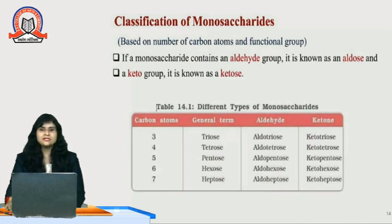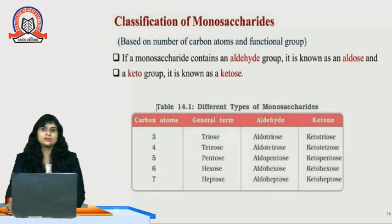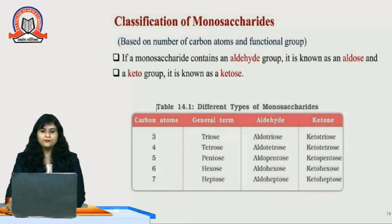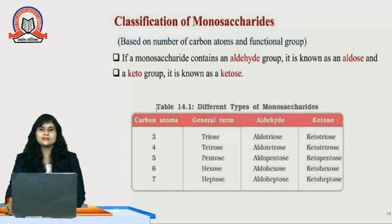In the previous session we already discussed what monosaccharides are. Monosaccharides are the smallest unit of any biomolecule which cannot be divided further. Now we will see the classification of monosaccharides. Based on the number of carbon atoms and functional group, if a monosaccharide contains an aldehyde group it is known as aldose, and if it contains a ketone group then it is known as ketose.